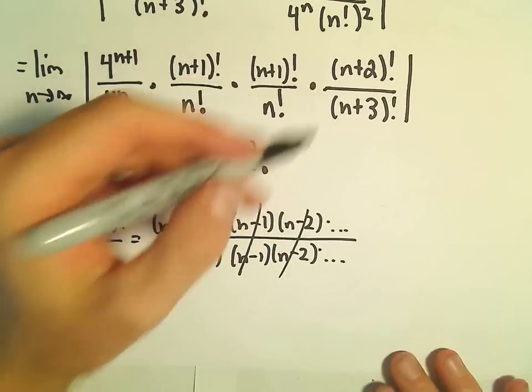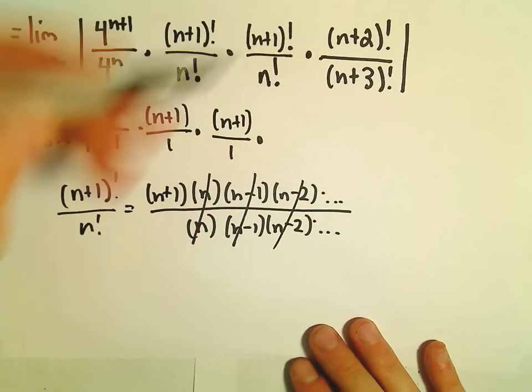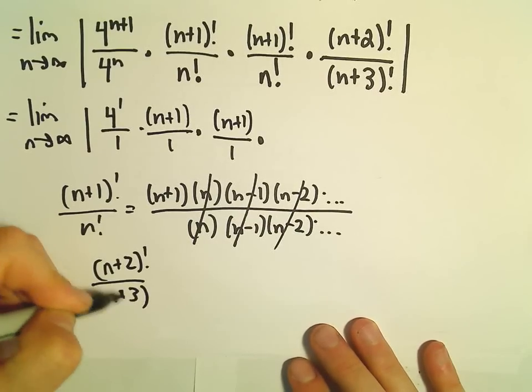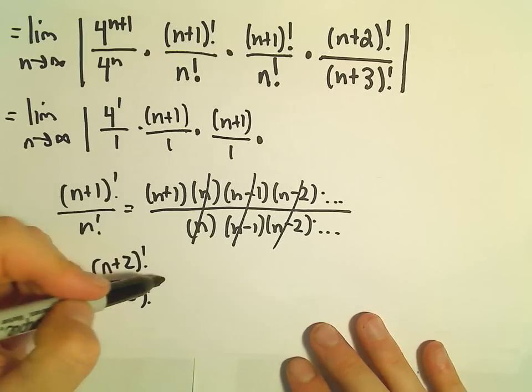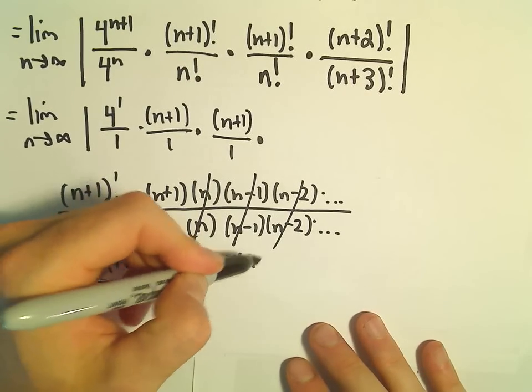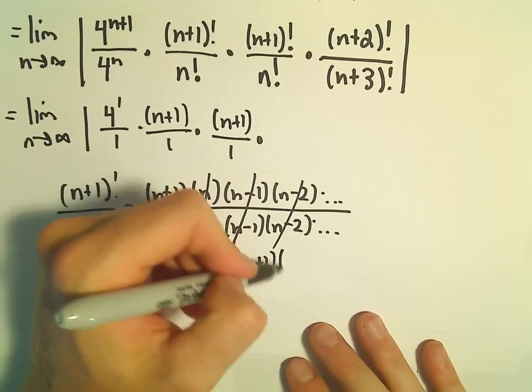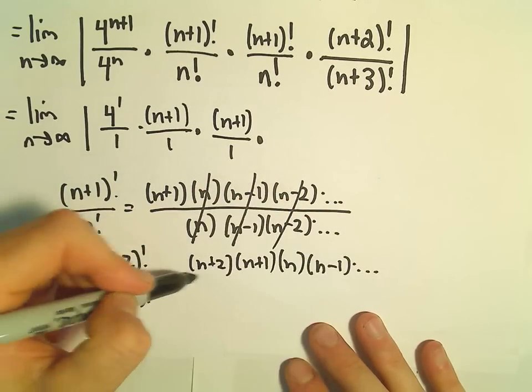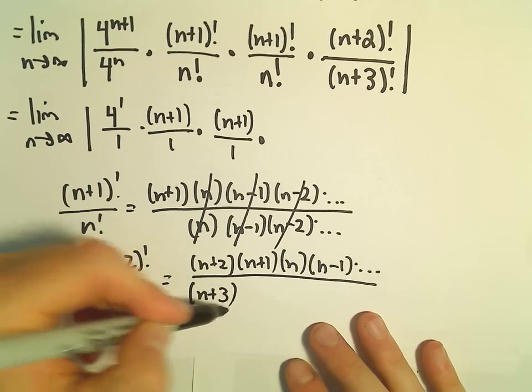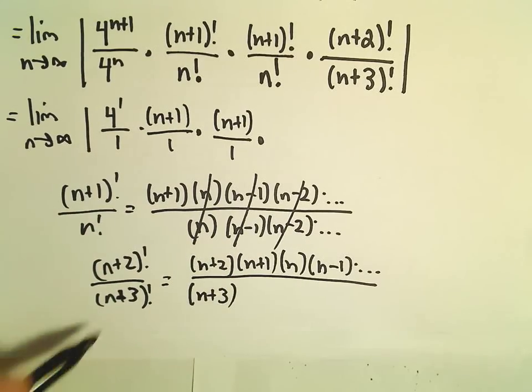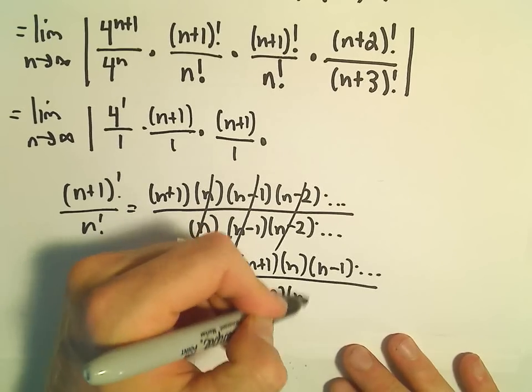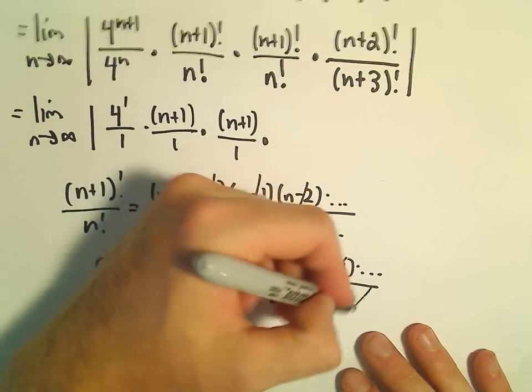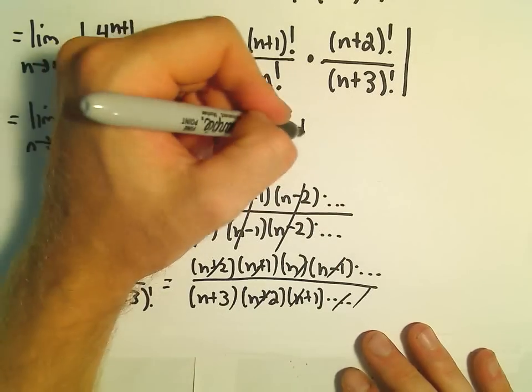And then n plus 2 factorial over n plus 3 factorial. Well, again, if you imagine expanding this out, we would have n plus 2. One smaller would be n plus 1, then times n, times n minus 1 dot dot dot. In the denominator, we would start with n plus 3. Then we would subtract 1 from that and have n plus 2, n plus 1 dot dot dot. Notice everything's going to cancel out except for the n plus 3 in the denominator.